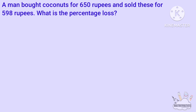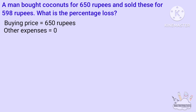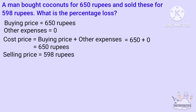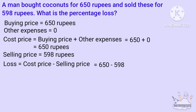Buying price is 650 rupees. Other expenses are zero. So cost price is equal to 650 plus 0, that is 650 rupees. Selling price is 595 rupees. Loss is equal to cost price minus selling price, that is 650 minus 595, that is 55 rupees.